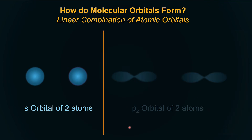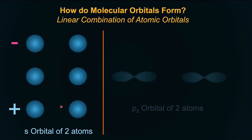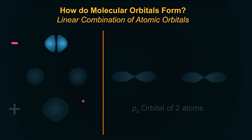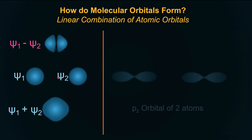What does this translate to in our understanding? If these were S orbitals of two atoms — constructive interference: the region between the nuclei has high probability of finding electrons. Destructive: the region between the nuclei has a node — not a good state. Mathematically, if these were ψ1 and ψ2, constructive interference is ψ1 + ψ2 and destructive is ψ1 − ψ2. The constructive state is lower in energy; the destructive state is higher in energy.